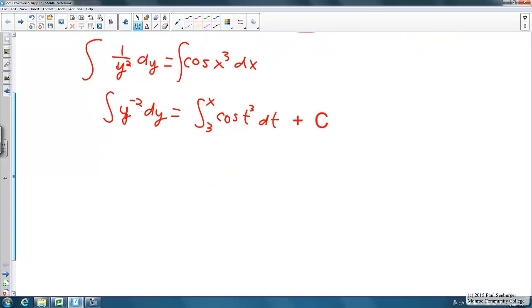In the next step we're going to integrate the left side. We end up with y to the negative 1 over negative 1 or a negative 1 over y. On the right side we've got our constant of integration c plus the integral from 3 to x cosine of t cubed dt. Now we're ready to solve for y. If I multiply the y up to the right and divide the whole expression on the right side down, I end up with y equals negative 1 over c plus the integral from 3 to x of cosine of t cubed dt.